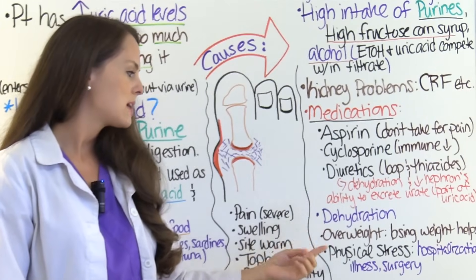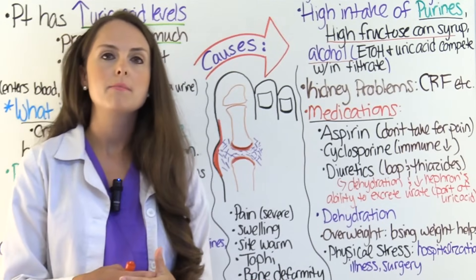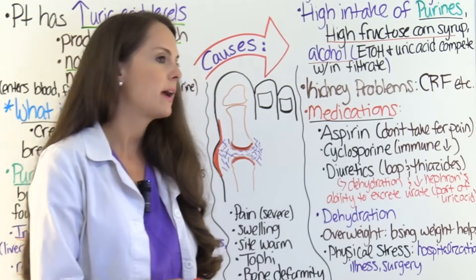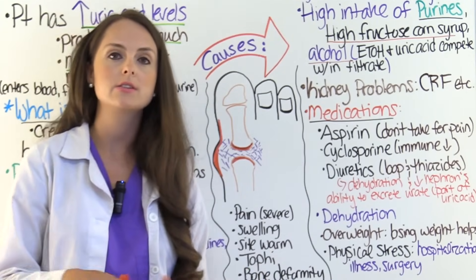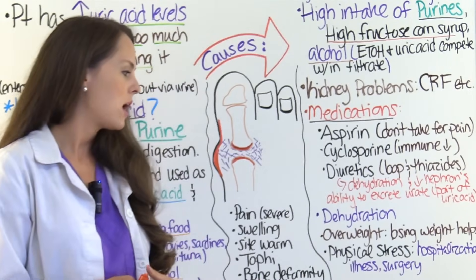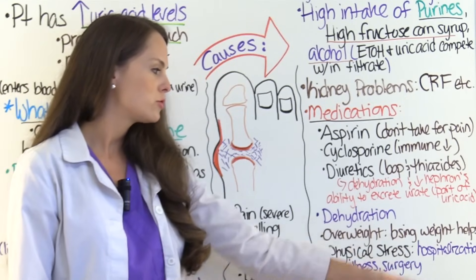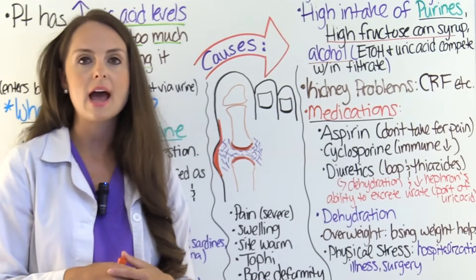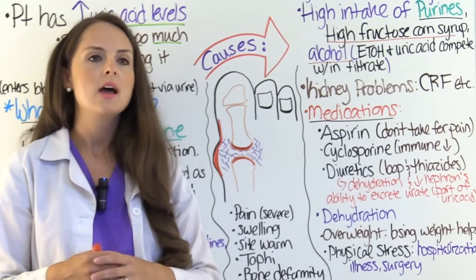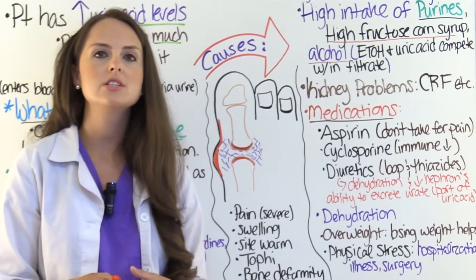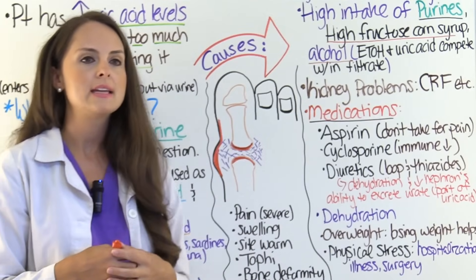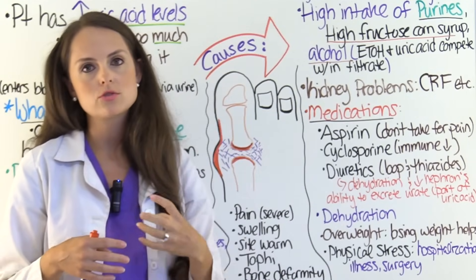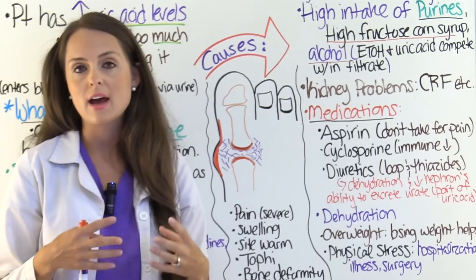Other causes include dehydration, which we just discussed, and being overweight — having a BMI greater than 25 puts the patient at risk. Helping the patient lose weight and educating them about it will actually decrease their uric acid levels and decrease their episodes of gout. Lastly, physical stress such as the patient being hospitalized, having an illness, or surgery. I have had many patients admitted for surgery who developed gout as a complication, and as a nurse, just that physical stress on the body will trigger attacks if they have a history of it.